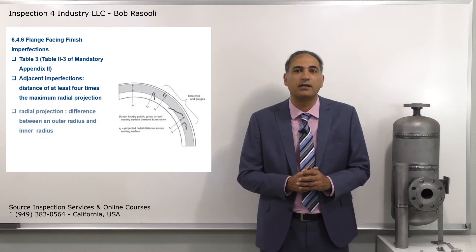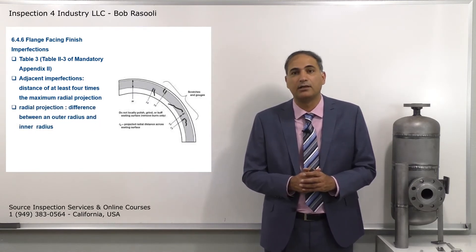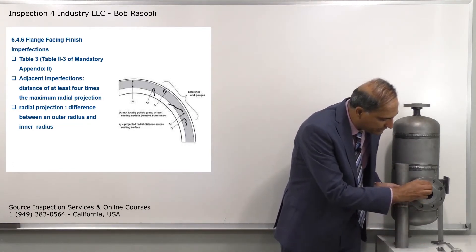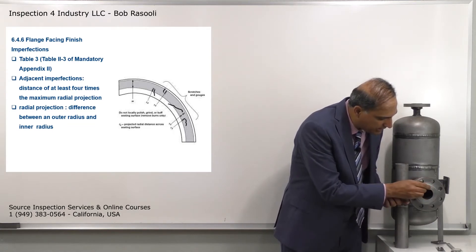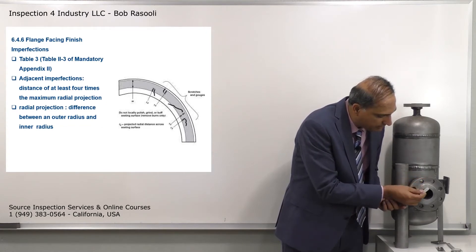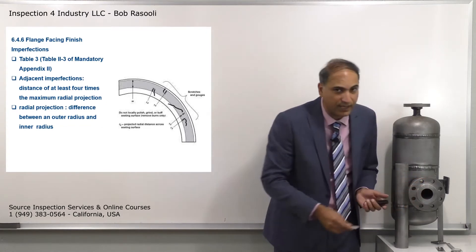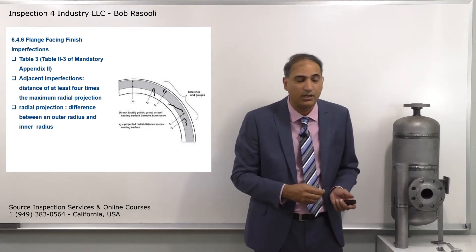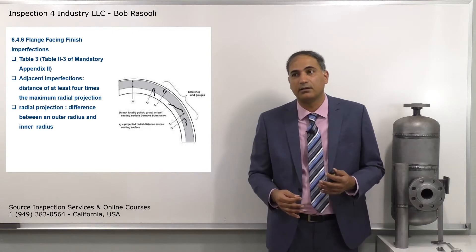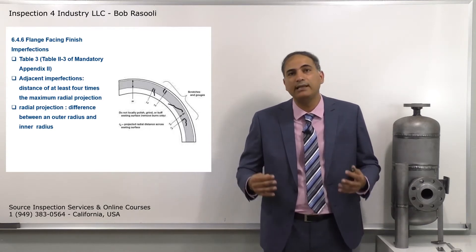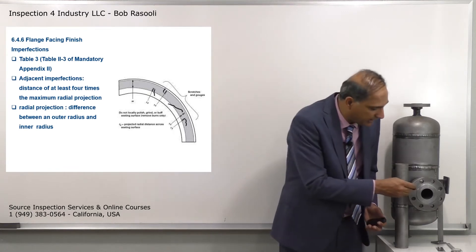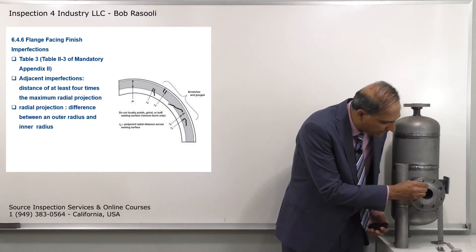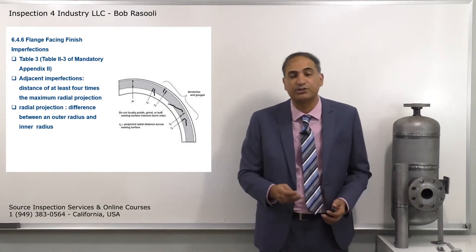The radial projection is the difference between the outer radius and the inner radius. So if there's a cut, the inner radius is on one side and the outer radius on the other side - that span is the radial projection. If a cut is parallel to the serration, the radial projection is much less, making it a more lenient requirement than cuts perpendicular to the serration.